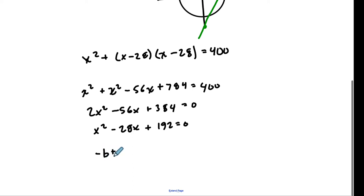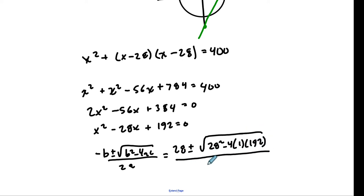negative b. Negative b. Plus or minus the square root. b squared minus 4ac. Over 2a. So here's b. It's negative 28. So the opposite of that is 28. Plus or minus the square root of 28 squared minus 4 times a is 1 times c. All over 2a. So 2 times 1.